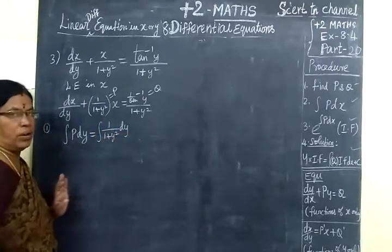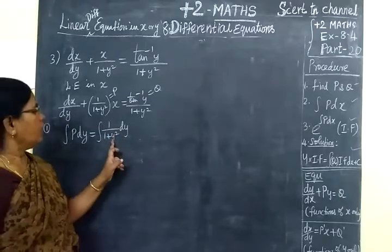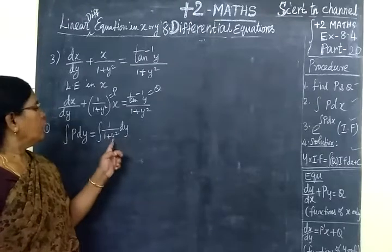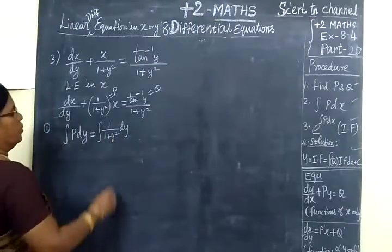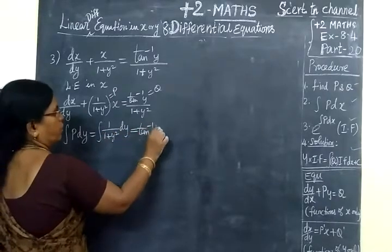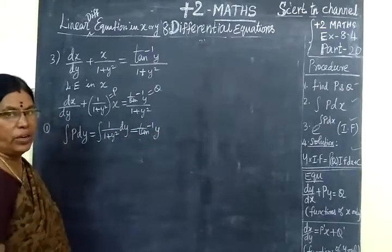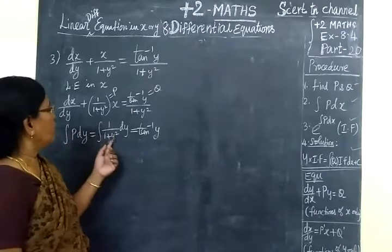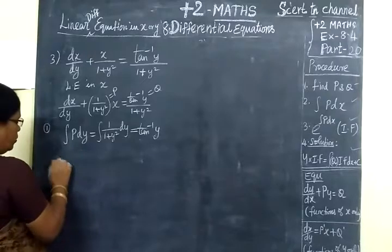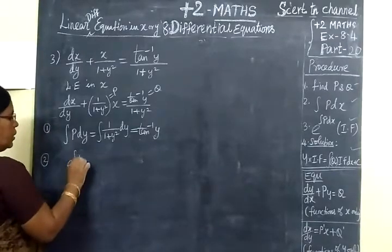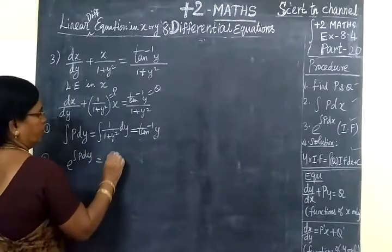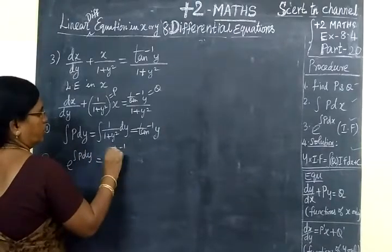That is completely different — the variable here is y. So the integral of 1/(1+y²) dy is equal to tan⁻¹y. Now 1/(1+y²) integrates to tan⁻¹y. So this is equal to tan⁻¹y.